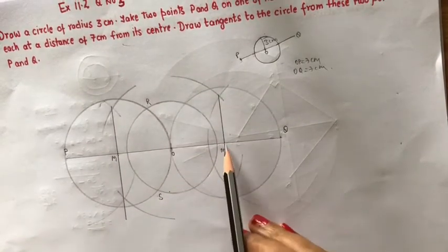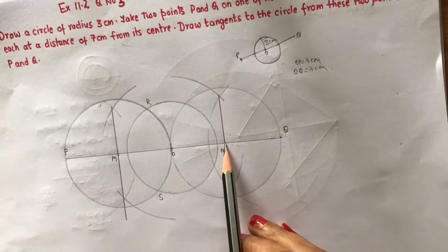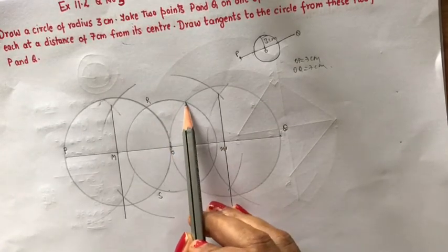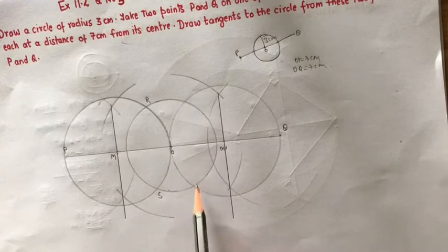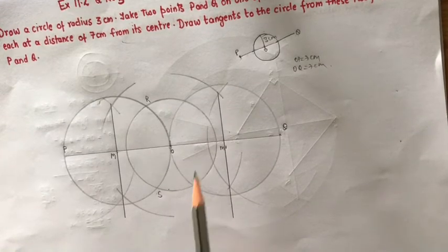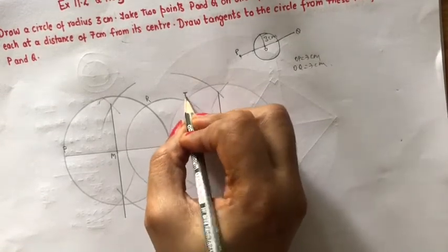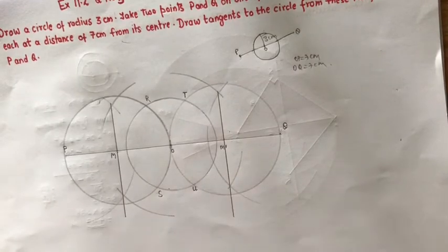Now when M dash as the center, again you know that this circle has cut this point at two points. These two points and we call this point as T and U, T and U.